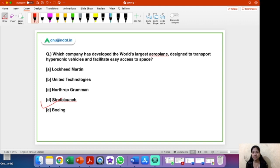Apart from this, an interesting fact related to this news is that this world's largest aeroplane has its name also. So what is the name of this aeroplane? The name is ROC, R-O-C, ROC. So this is the name of this world's largest aeroplane.